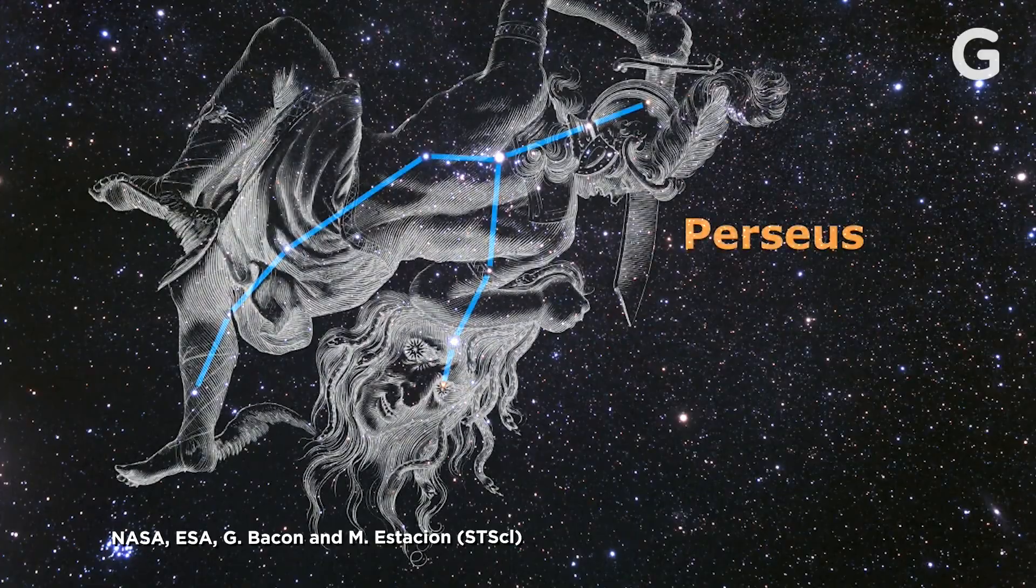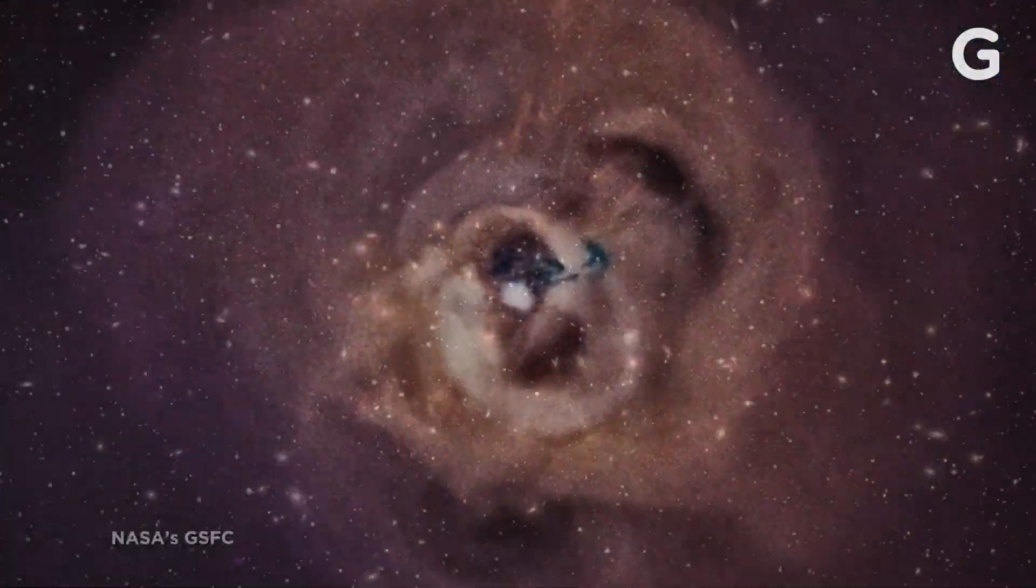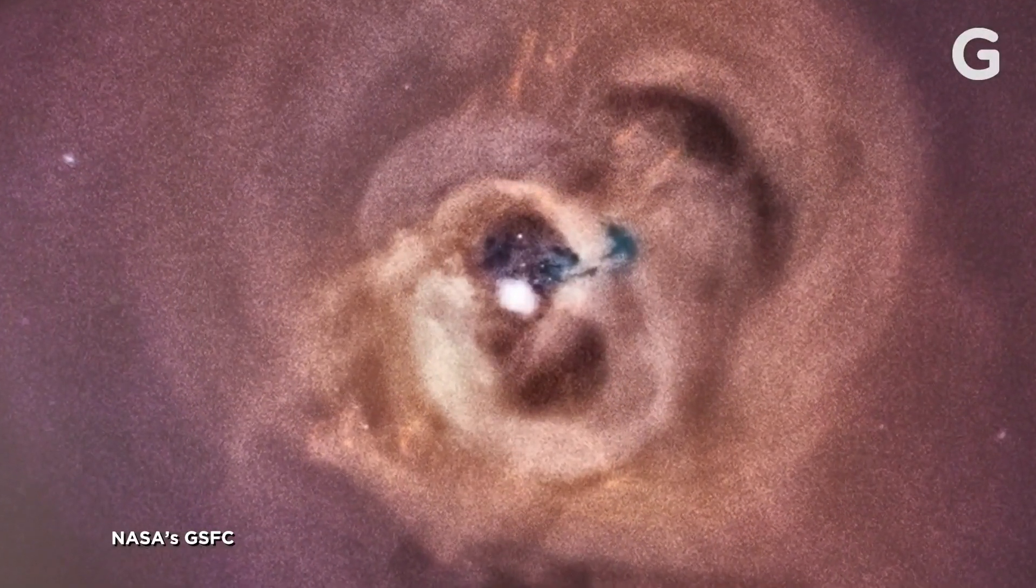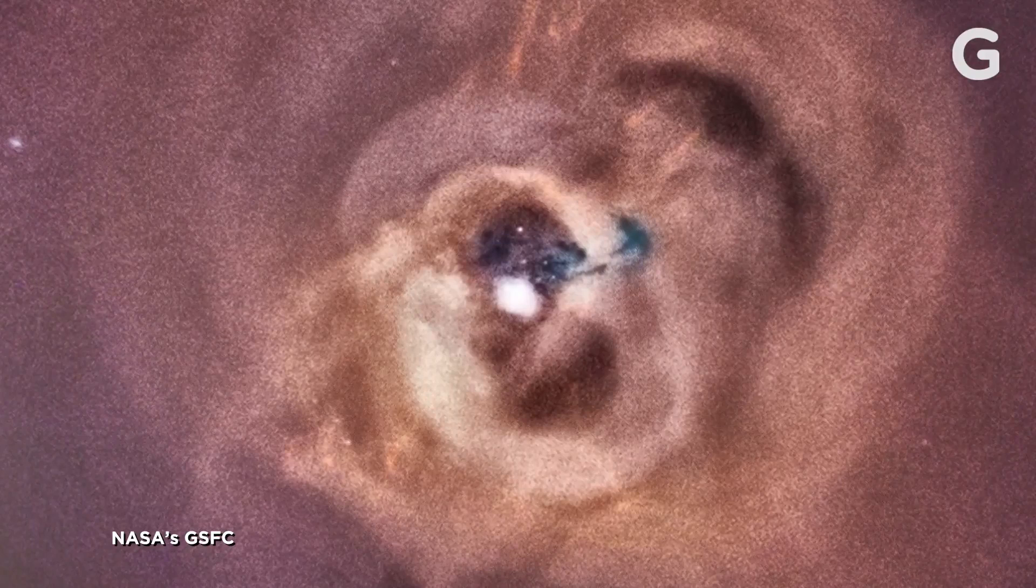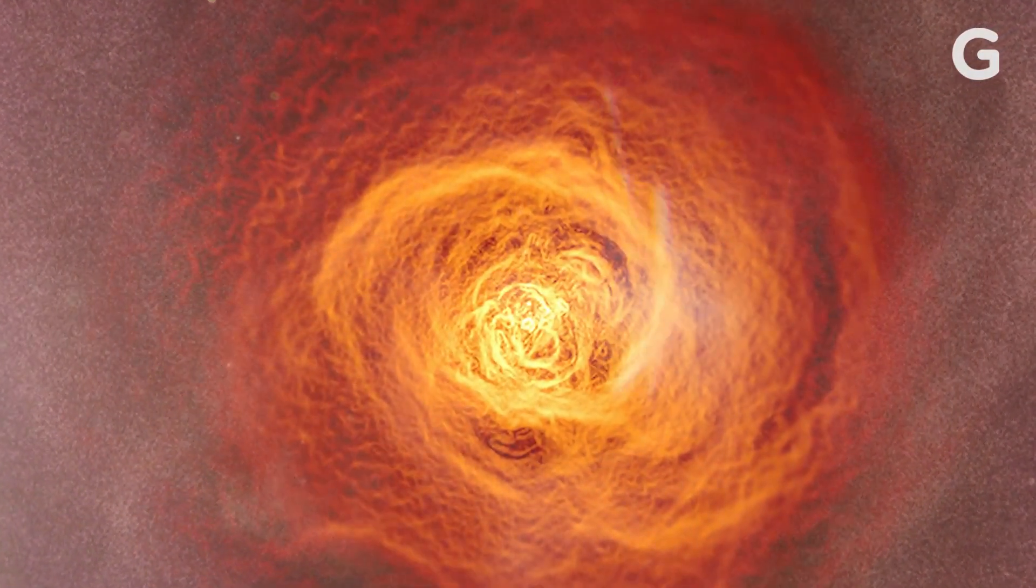The Perseus cluster is one of the biggest galaxy clusters, and it is about 250 million light-years away from us. So people were looking at the Perseus cluster because they wanted to study the gas in more detail, figure out its structure, is it cooling or not, what's going on.